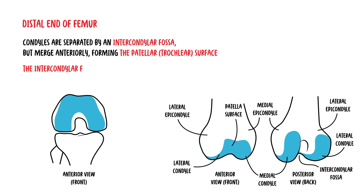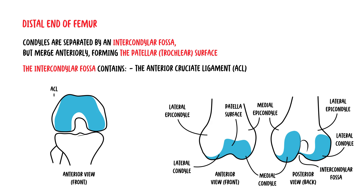The intercondylar fossa contains two facets for the attachment of the intracapsular knee ligaments — the anterior cruciate ligament (ACL) and the posterior cruciate ligament (PCL).